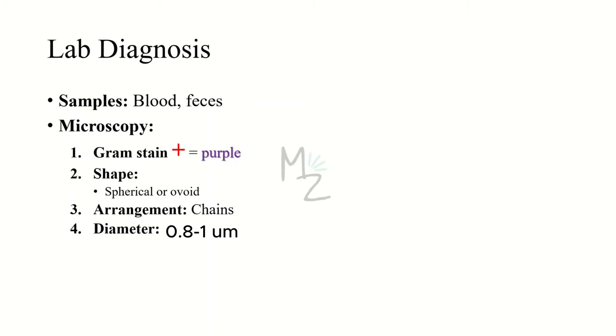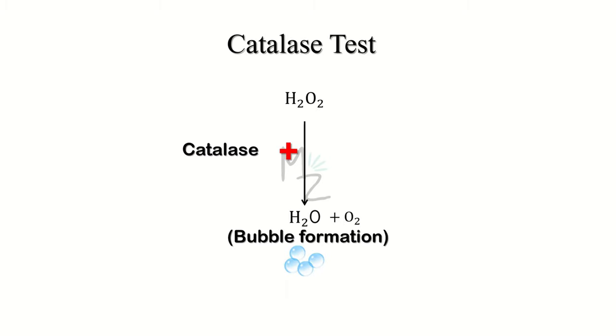Lab diagnosis. Sample collection includes blood, feces and so on. On gram staining, it will reveal that this bacterium is gram positive because it's purple colored. Under microscopy, this bacterium is spherical or ovoid in shape and is arranged in chains. Okay, as I told you that we'll be talking about catalase test in the lab diagnosis section.